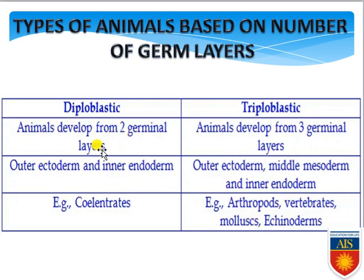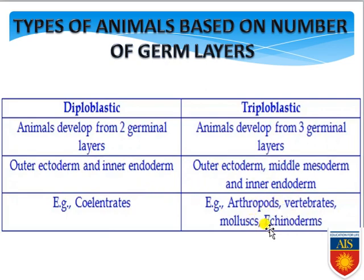Diploblastic organisms include Porifera, Cnidaria, and Ctenophora — they have ectoderm and endoderm as two distinct germinal layers. Starting from Platyhelminthes onwards, all are triploblastic organisms — Arthropoda, Vertebrates, Mollusca, Echinodermata. In Porifera, Cnidaria, and Ctenophora, between ectoderm and endoderm there is no mesoderm, but a precursor form called mesenchyme is present. They are still considered diploblastic organisms.